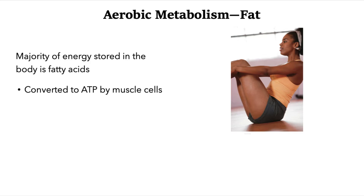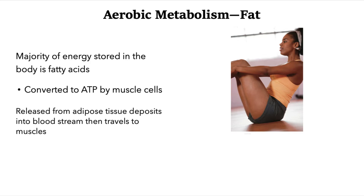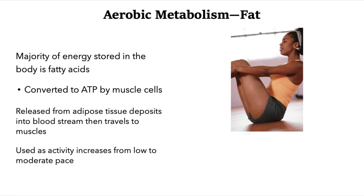Fatty acids are particularly converted into ATP by muscle cells. It's well known that if you want to lose excess fat off your body, you want to build muscle — the more muscle you build, the more fat the body consumes to produce energy for those muscle cells. Weight lifting is a really good sport to build that muscle, and then with that extra muscle you can do aerobic exercises to get rid of the extra fat. These fatty acids are released from adipose tissue into the bloodstream and travel to the muscle.